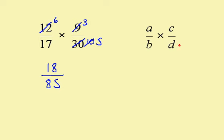Algebraically, we multiply the tops and we multiply the bottoms, so I have AC over BD.